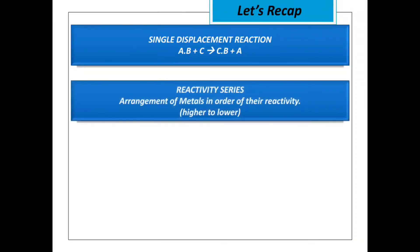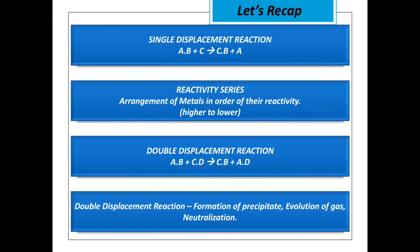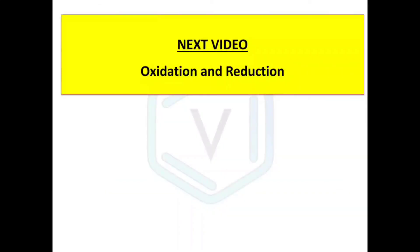In summary, we have covered: single displacement reaction, in which one element replaces another in a compound; the reactivity series, in which metals are arranged from highest to lowest reactivity; double displacement reaction, in which two cations or anions switch places to form two new compounds; and how double displacement reactions are accompanied by precipitate formation, evolution of gas, or neutralization. In the next video, I'll be teaching oxidation and reduction reactions.